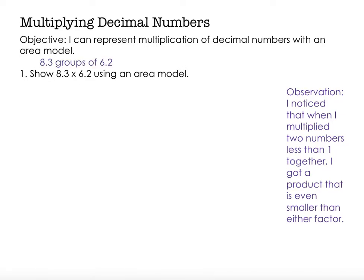All right, so 8 and 3 tenths times 6 and 2 tenths, another way of saying that is 8 and 3 tenths groups of 6 and 2 tenths. Before I get started with the exact computation, it's really important that I get an estimation in my mind so that when I go to tally my final result, I can look at it and determine if it is reasonable.